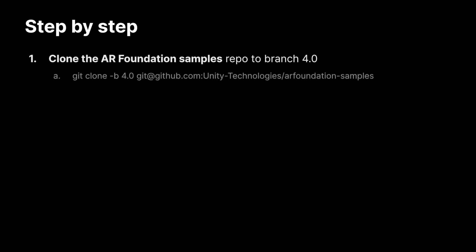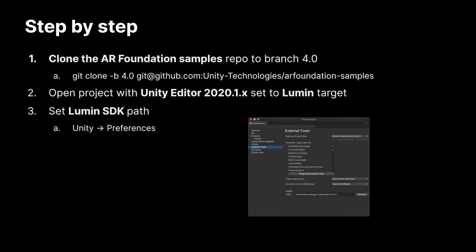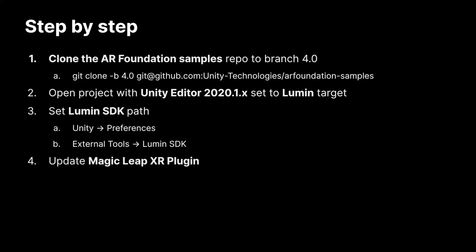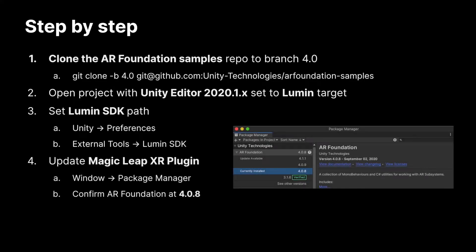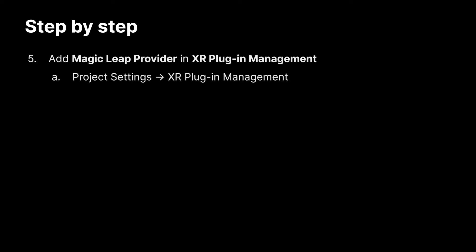Step by step. Now we're going to walk through the steps needed to get started with the AR Foundation samples for Magic Leap. First, we're going to want the right AR Foundation samples branch, which is 4.0. We're using git clone to get these samples, but you can download a zip too if you prefer. Then we're going to open up the project with Unity Editor 2020.1 preset to the Lumen target. Once that completes, it's time to set the Lumen SDK path in the preferences so it knows where to find the Magic Leap compilation tools. Then we're going to update the packages in the Package Manager — first let's confirm that AR Foundation is at 4.0.8, and now let's update the Magic Leap XR plugin to 6.0.0.